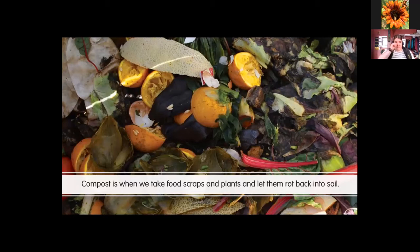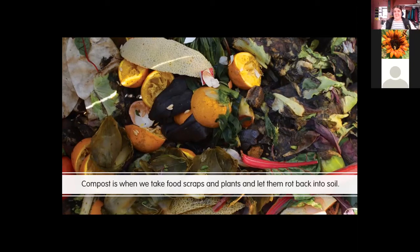The simplest definition: composting is when we take food scraps and plants and let them rot back into soil. This is very similar to natural processes happening all around us — leaves that drop from trees, plants and animals that finish their life cycle and die. All of them are reprocessed by microbes and turned back into soil, keeping things going in an endless loop.